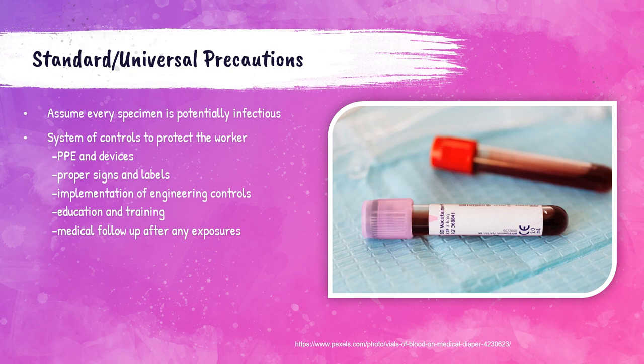Using standard universal precautions in the laboratory means we assume every sample and specimen we receive and test is potentially infectious. A system of controls helps protect laboratory workers through proper PPE and devices, proper labeling, education and training, and medical follow-up if a worker is exposed.